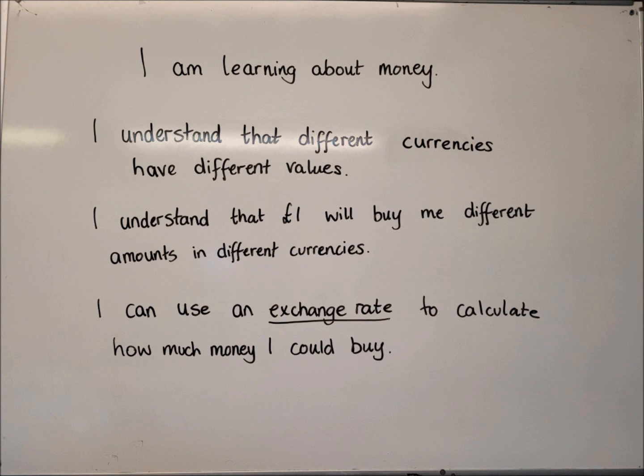The last success criteria is that we're going to be using what's called an exchange rate to calculate how much money I can buy in the different currencies. This is quite complicated. It's useful in real life if we are going on holiday and we need to buy currency so that when we are in a foreign country, we can't use pounds. We need to use the different currencies that that country uses. So we would go to the post office or a travel agent or places that sell different currencies and use pounds to buy different currencies. An exchange rate is something that works out what your pounds can buy you in that currency.